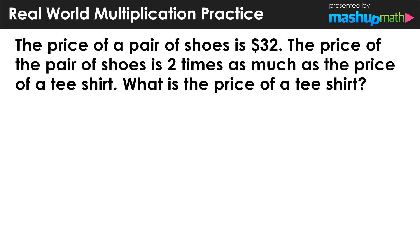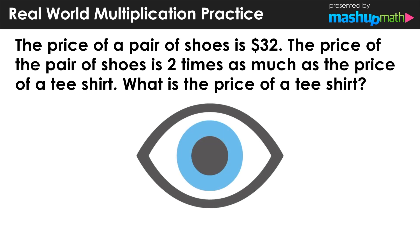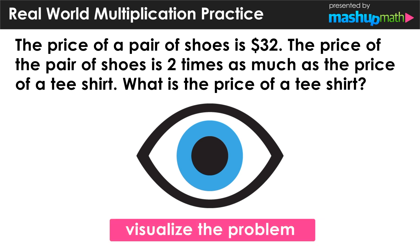Now, if you're going to solve a word problem like this, you have to be able to visualize the problem, which means that you're able to take the key information from the word problem, model it, and use that information to find whatever it is you're looking for — in this case, finding the price of a t-shirt. So let's go ahead and visualize what's going on in this problem.